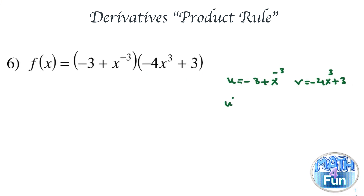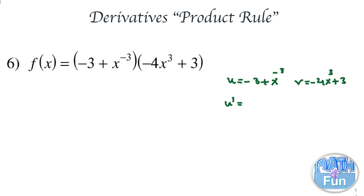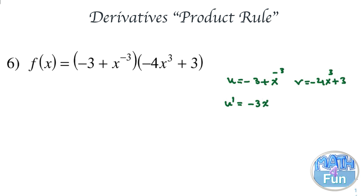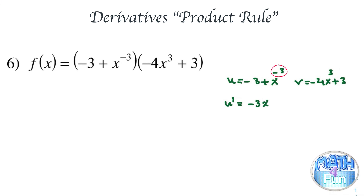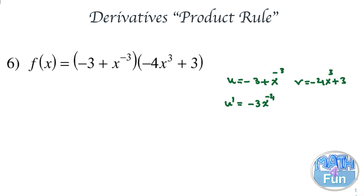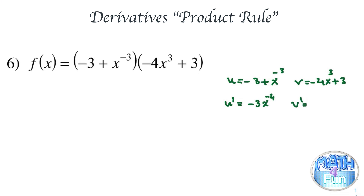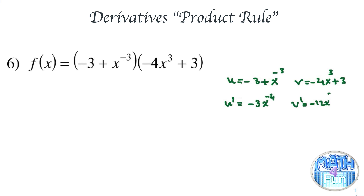Let's find u prime: the derivative of minus 3 is 0, and the derivative of x to the power negative 3 gives us negative 3x to the power negative 4 — we drop down the negative 3, and subtract 1 from the power to get minus 4, not minus 2, so it's minus 3x to the power negative 4. Then v prime: drop down the 3, multiply by minus 4 to get minus 12x squared, and the derivative of 3 is 0.